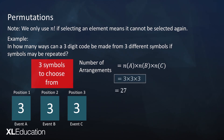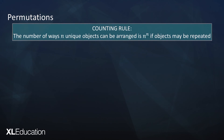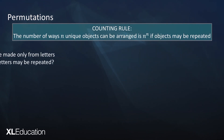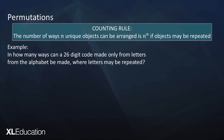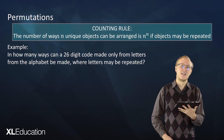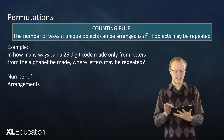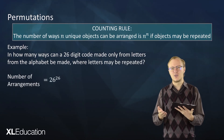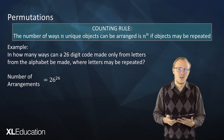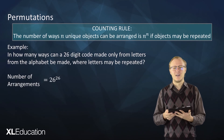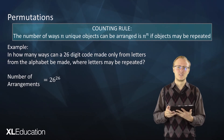Notice that three times three times three equals three cubed, giving us another counting rule: the number of ways n unique objects can be arranged is n to the power of n if objects may be repeated. For example, in how many ways can a 26-character code be made only from letters of the alphabet where letters may be repeated? The answer is 26 to the power of 26 — a disgustingly big number, so we can just leave it as 26 to the power of 26.